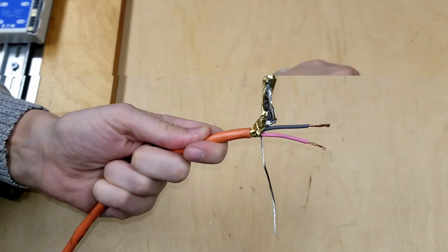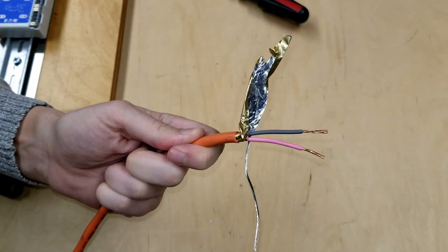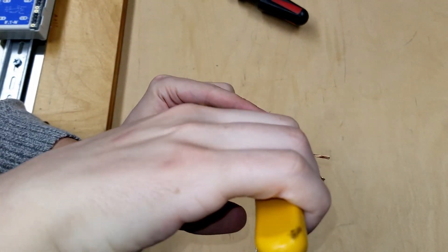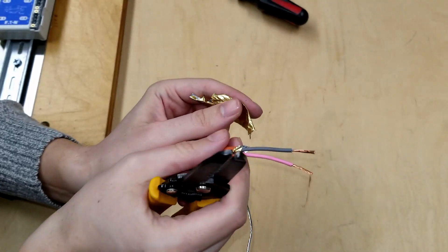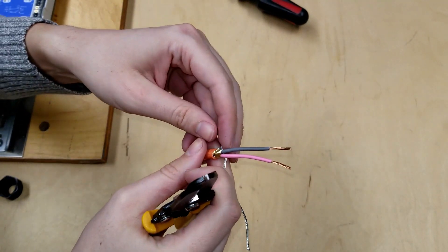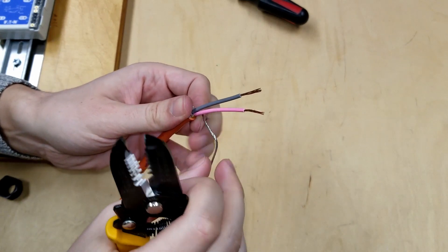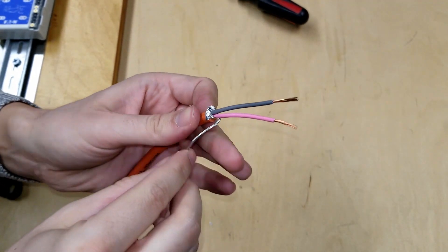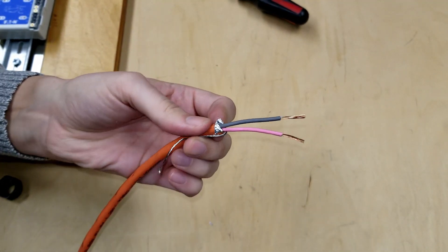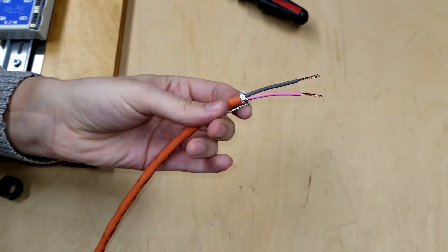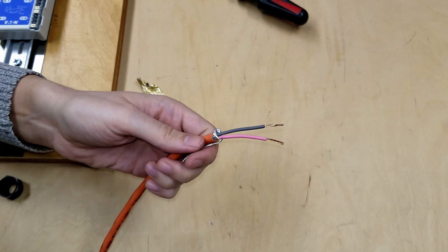Now we'll see how to properly prepare the Fieldbus cable for the instrument. Start by cutting off the excess foil. Then take the shield drain wire, make sure it's not too long, and fold it back along the jacket of the cable.